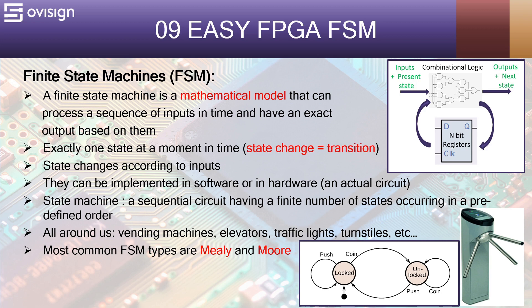State machines are all around us. We can find them in vending machines, elevators, traffic lights, and turnstiles. The most common types of finite state machines are Mealy and Moore. You can find out more about them by using the resources from the video description.